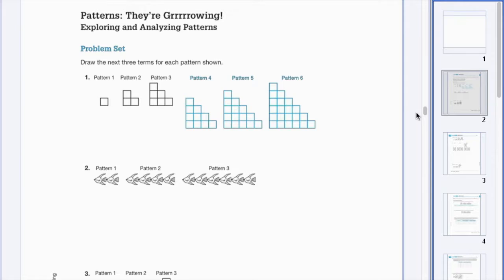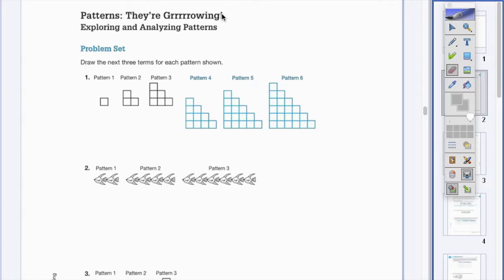talk to you guys about is here we have like a box, right? So here we have one box, and then in pattern number two we have three boxes, and then in pattern number three we have one, two, three, four, five, six boxes.